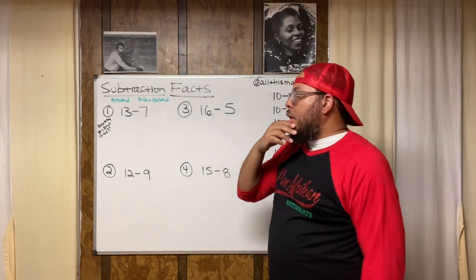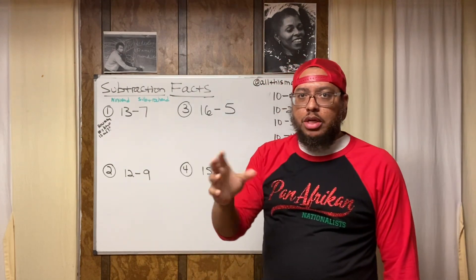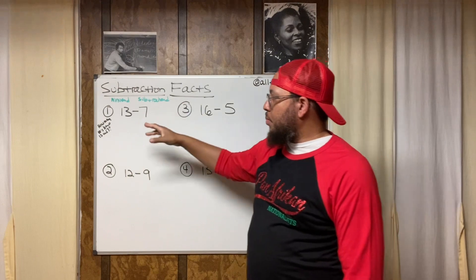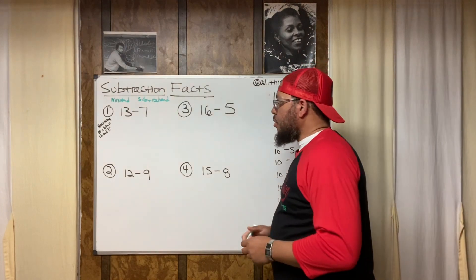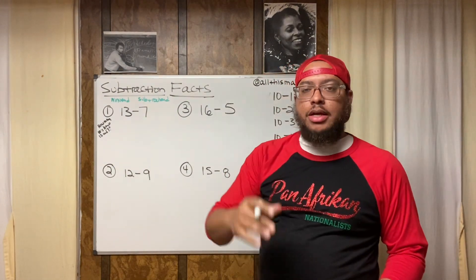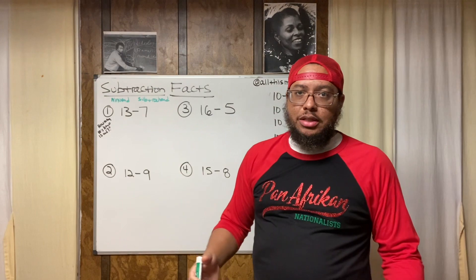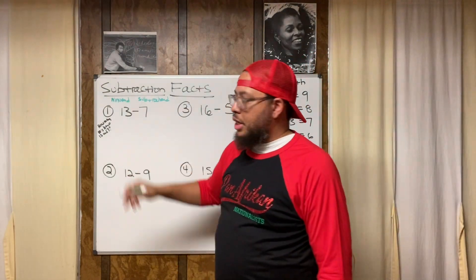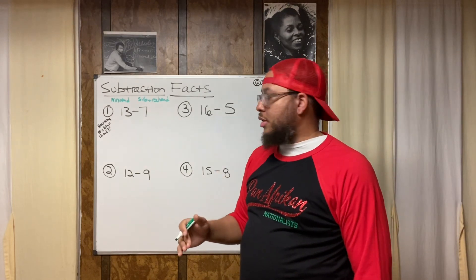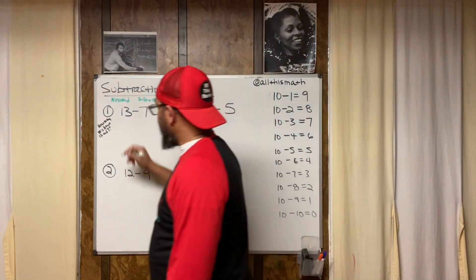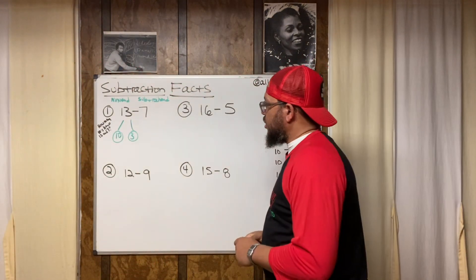If we use a number bond to answer this question, we deal with the bigger number first. The bigger number is 13. Ten is our happy number because it makes addition and subtraction easier, and we're working in the base-10 system. So I break 13 down into 10 plus 3.